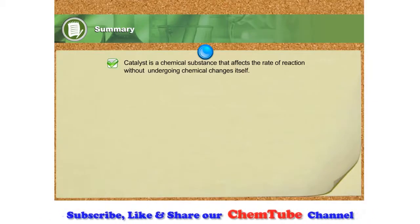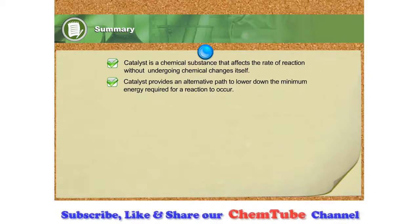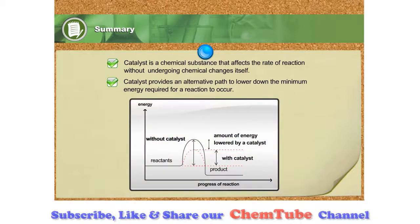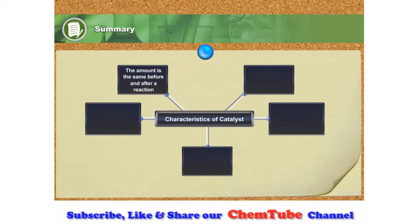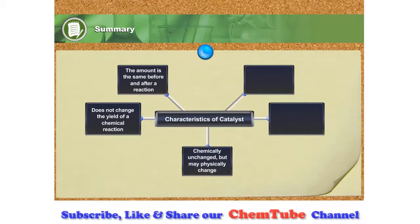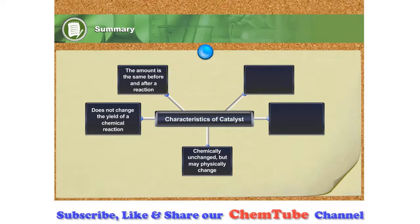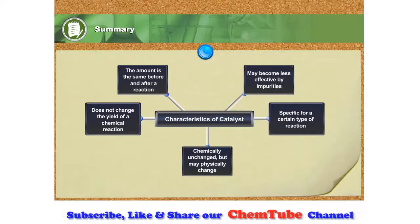Catalyst is a chemical substance that changes the rate of reaction without undergoing chemical changes itself. Catalyst provides an alternative path to lower down the minimum energy required for a reaction to occur. The amount of catalyst is the same before and after a reaction. It does not change the yield of a chemical reaction. It is chemically unchanged at the end of a reaction but could physically change. It is specific for a certain type of reaction. Impurities can cause it to become less effective.